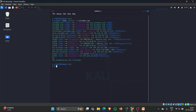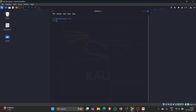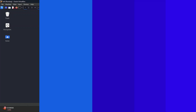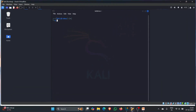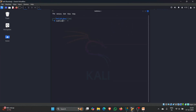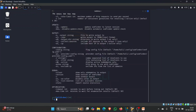The second tool is Subfinder. Subfinder is a fast, open source subdomain discovery tool used in penetration testing and reconnaissance. Our goal with Subfinder is to identify subdomains belonging to our target — which could relate to APIs or public datasets — and then potentially find vulnerabilities in them. Let's see a practical example. I'll type 'subfinder -h' to open the help menu.